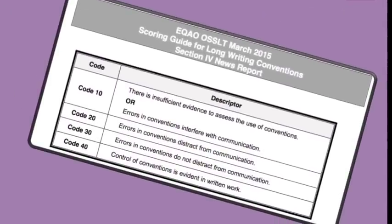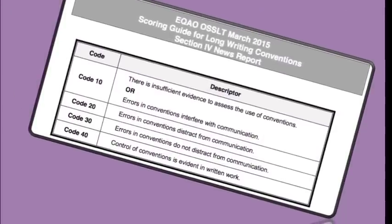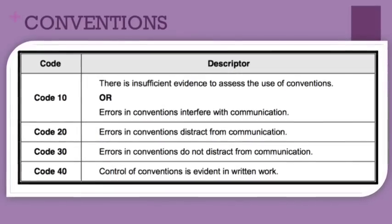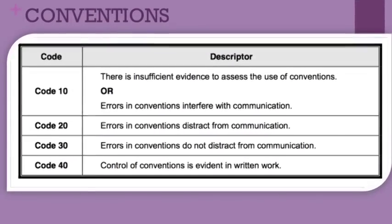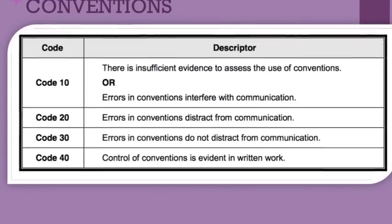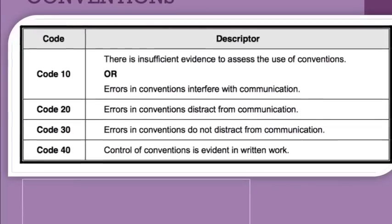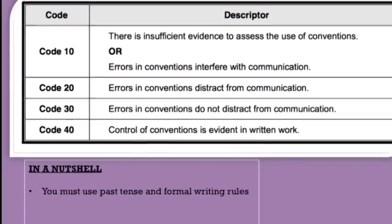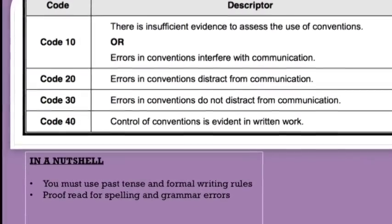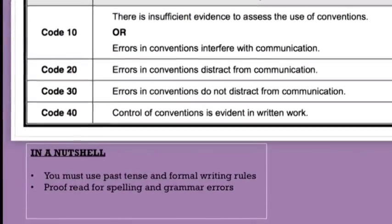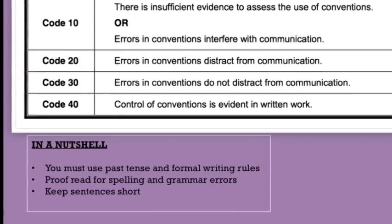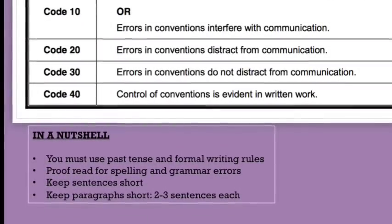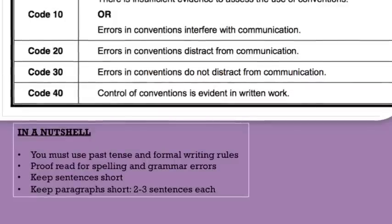Let's take a closer look at what these entail. In terms of writing conventions, they're not looking for a perfect piece of writing, but what they are looking for is that any errors are minor and they don't distract from what you are actually trying to say, and that you can control the writing conventions in your work. Make sure to use past tense and formal writing rules, then go back and proofread for spelling and grammar errors. Keep sentences short — they're not looking for anything fancy — and keep your paragraphs short as well, two to three sentences each.